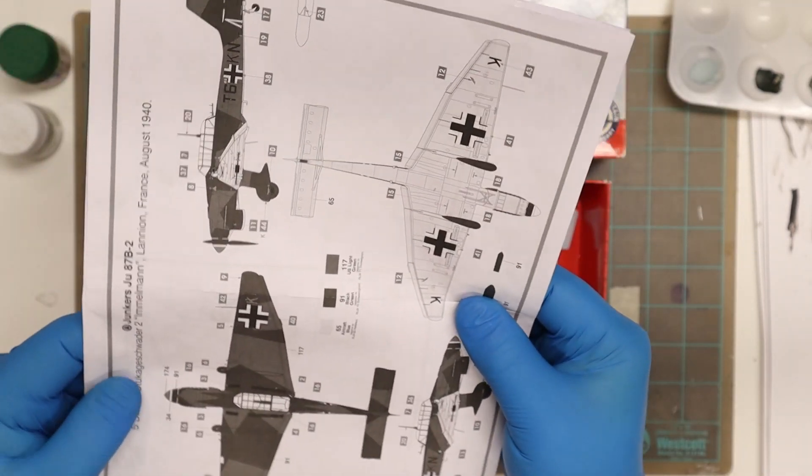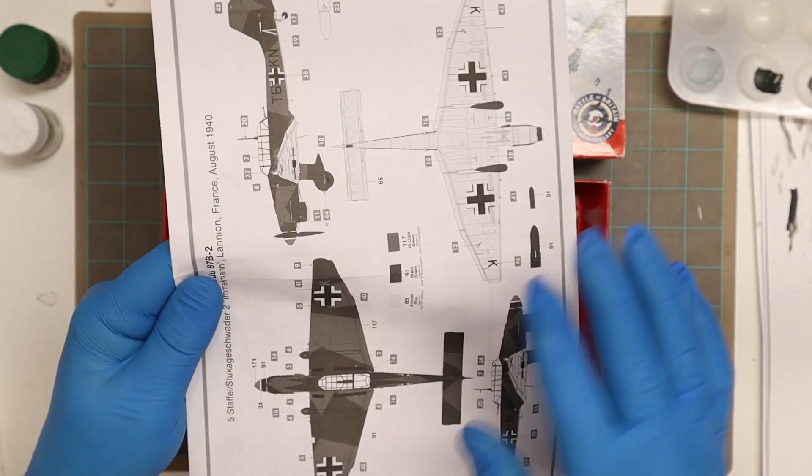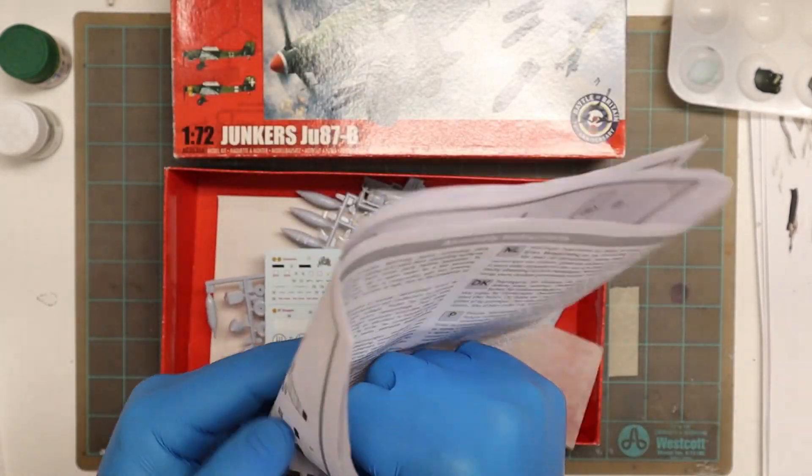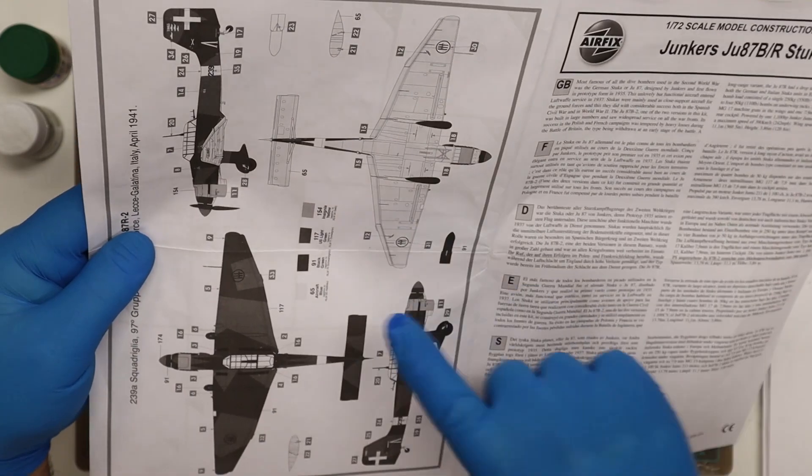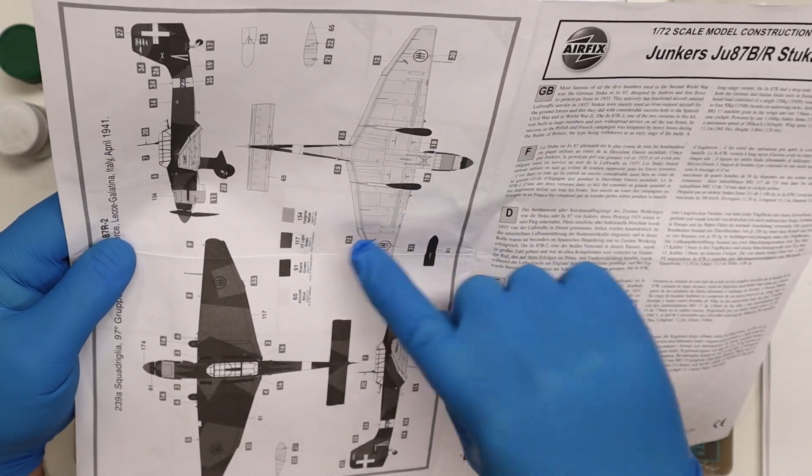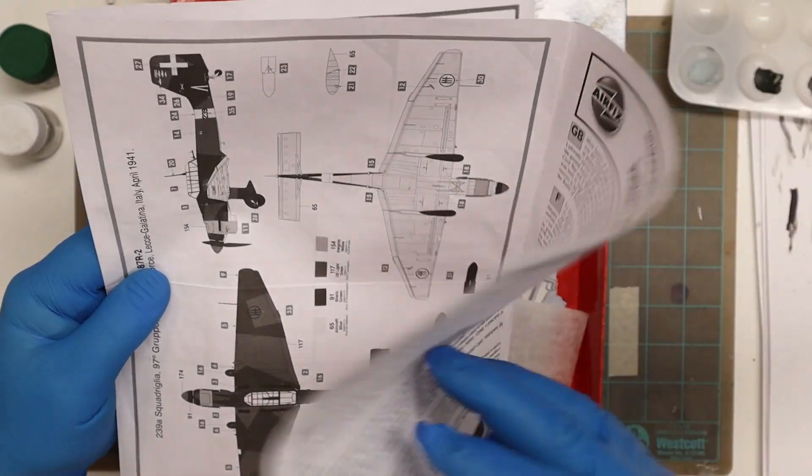Looking at the back here, the paint scheme for the German one and the Italian squadron. They've got all the colors here from the Humbrol and the RLM colors on the bottom, so very nice instruction sheet.